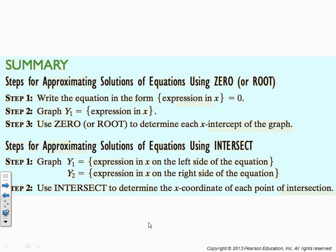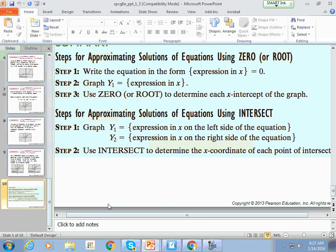Alright, so to summarize, steps for approximating solution using zero or roots: we write the equation as whatever equals 0 and then graph the non-zero side of the equation, or we let one side of the equation equal y1 and the other side of the equation equal y2 and find where they intersect. And that's how you use a graphing utility.